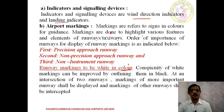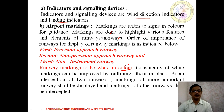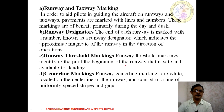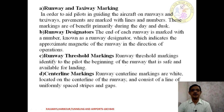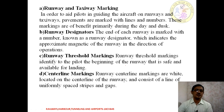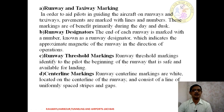The consistency of white markings can be improved by outlining them in black color, so that whenever there is an intersection of two runways, the marking for the more important runway shall be displayed. Moving to runway and taxiway marking — in order to aid the pilot for proper guiding of an aircraft on the runway and taxiway, pavements are marked with lines and numbers for easy identification, primarily benefiting operations during the day.